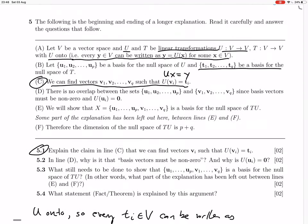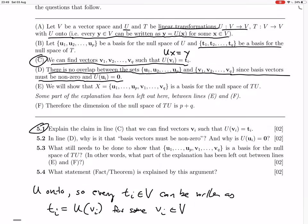5.2, in line d, why is it that basis vectors must be non-zero? Well, that's just going to be because, you know, you can't have a zero basis vector because the basis is independent. And then it says, and why U(ui) equal to zero. Okay, so line d says, there is no overlap between the set with u's and the set with v's since basis vectors must be non-zero and U(ui) equals zero. Okay, so basis vectors are non-zero because they're independent. Okay. And zero is dependent.